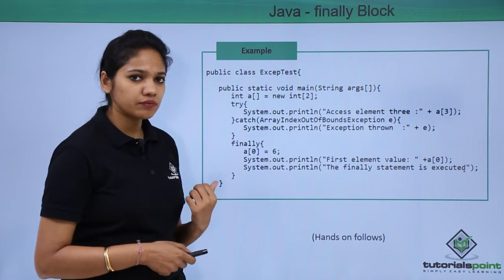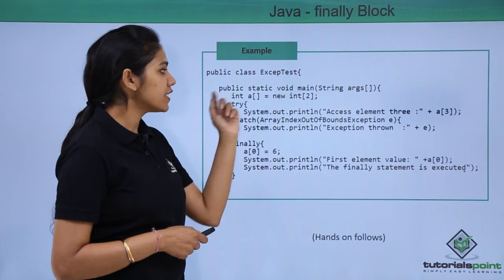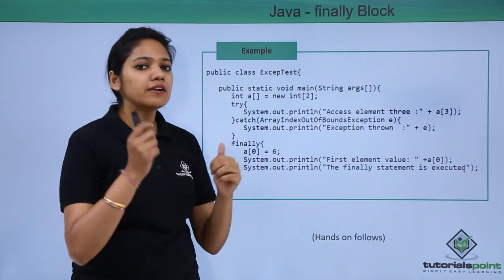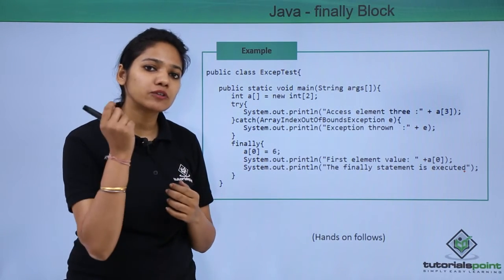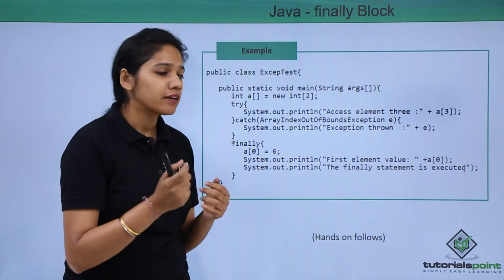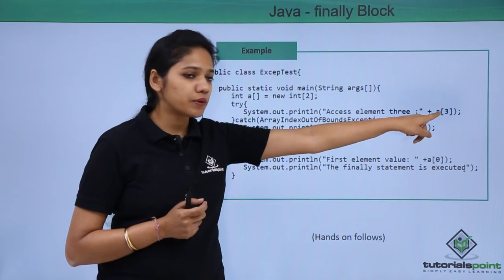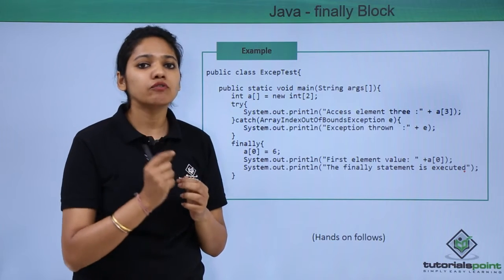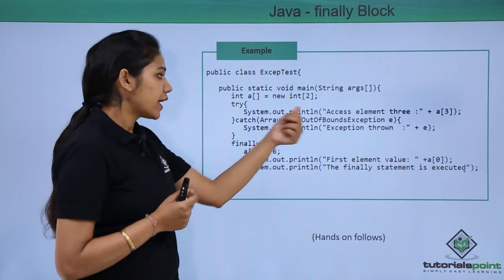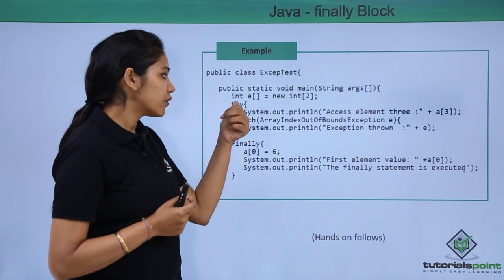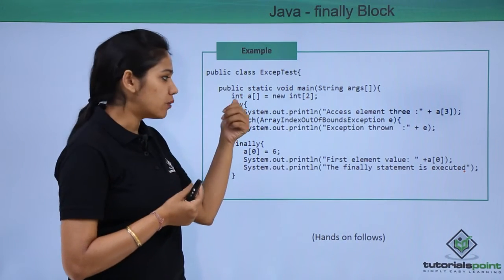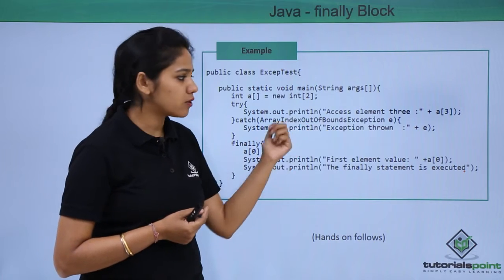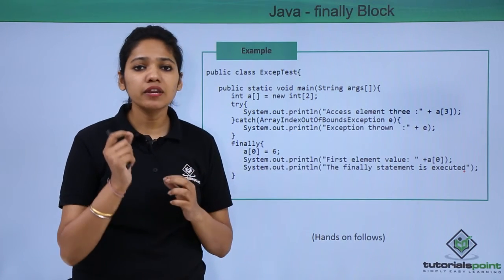Let us see an example where we have created a class called ExceptionTest. In the main method, we have declared an array with a length of 2. In the try block, we are trying to display the value at array index 3. The length of the array is 2, so we do not have a value at index 3 — therefore it will throw an ArrayIndexOutOfBoundsException, which will be caught by the catch block. Catch immediately follows the try block, so we write ArrayIndexOutOfBoundsException.